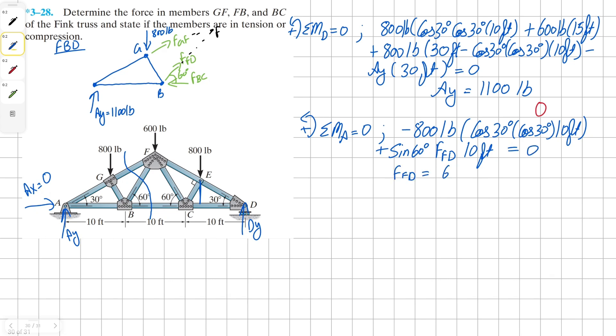And if it's counterclockwise, all equals to zero. For force FB, we get our solution at 692.82 pounds. And it's in positive direction. Therefore, we assumed our reaction in the right direction. This means this member is in tension.